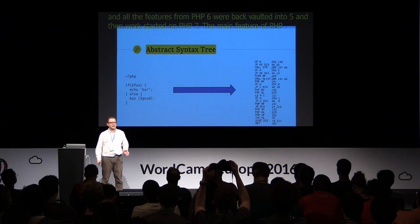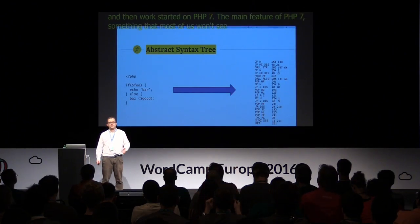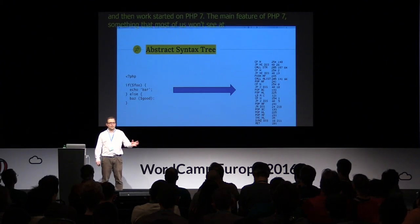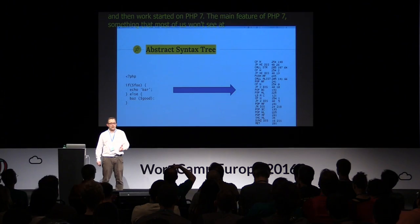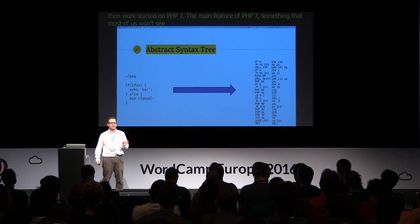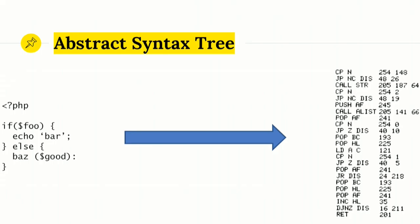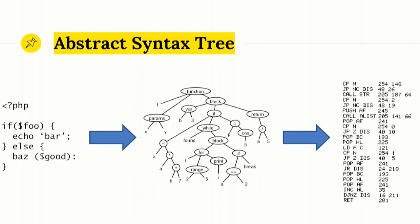The main feature of PHP 7 is something that most of us won't see day to day, because it's about how PHP is actually executed. Because PHP is an interpreted language, it first has to go from PHP code into machine code the computer can execute. In PHP 5, it did this by scanning ahead and turning complete instructions into machine code straight away. The internals team decided to go with a system called the abstract syntax tree as a middle step, which allowed PHP to use a lot less memory, meaning it could be a lot quicker.